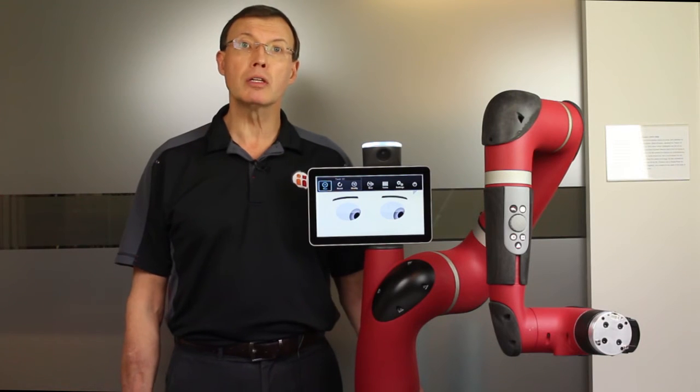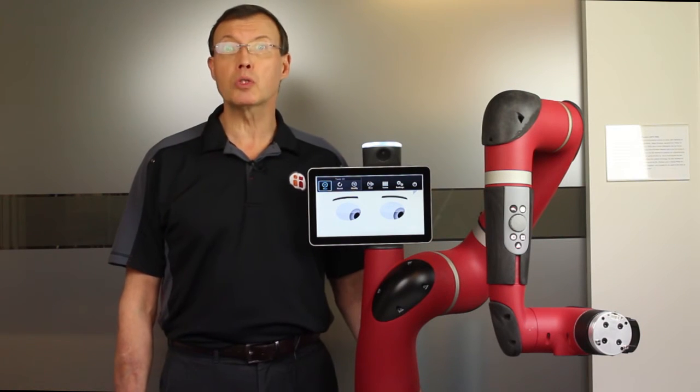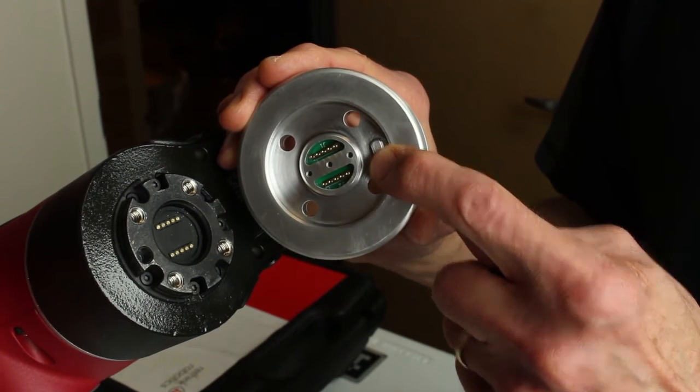Then, install the Baxter gripper adapter plate using the four bolts provided. Note the alignment pin.